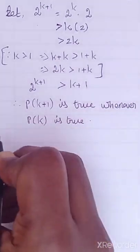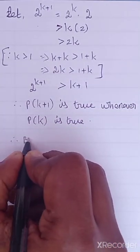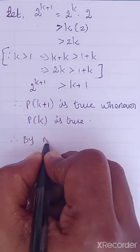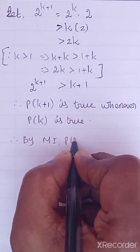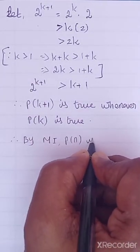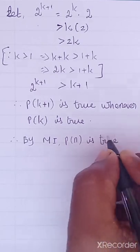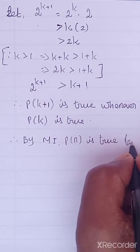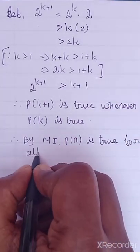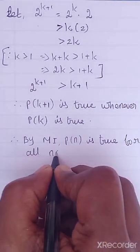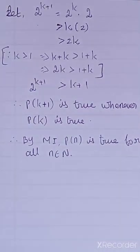And what is the last step to conclude? Therefore by mathematical induction, P of N is true for all N in the natural numbers. That is all.